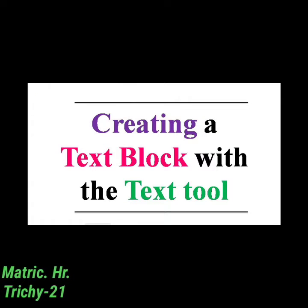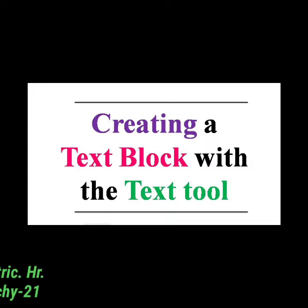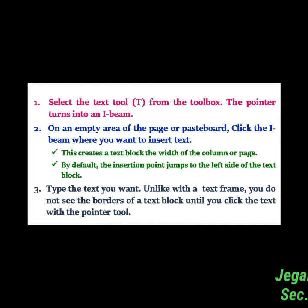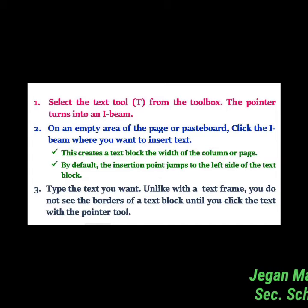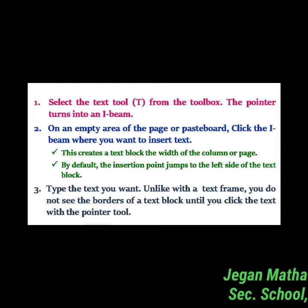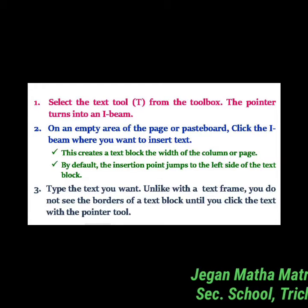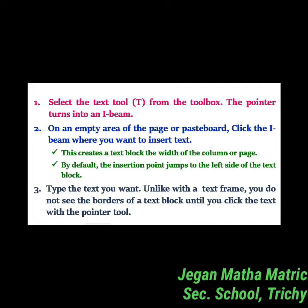Now let us see how to create a text block with the text tool. There are three steps. First, select the text tool from the toolbox — we have already studied the toolbox tools. Select the text tool, and the pointer turns into an eye beam.